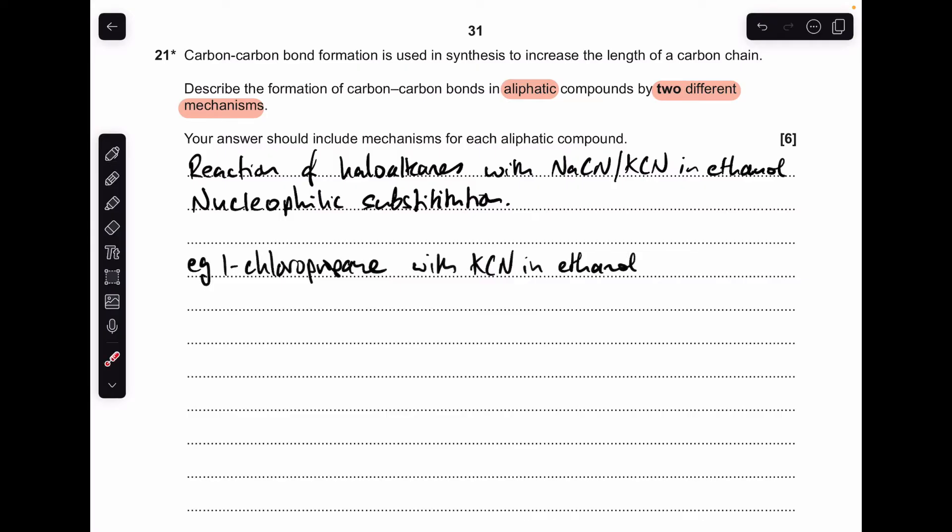Now, there's absolutely loads of different examples we can use here, so obviously we haven't got time to do all of them. I'm literally just going to do one for each. The example I'm doing is 1-chloropropane with potassium cyanide in ethanol. So there's the overall reaction. The product is called butane nitrile, and the carbon-carbon bond that's been formed here is between this carbon and this carbon, but we'll see that much more clearly when we look at the mechanism now.